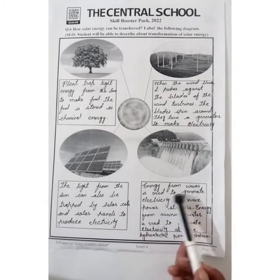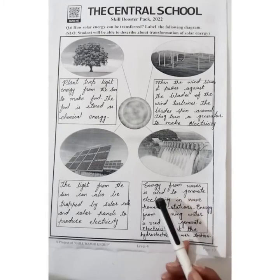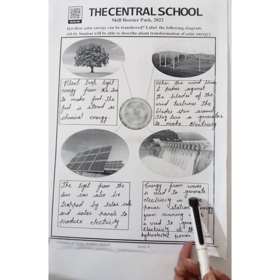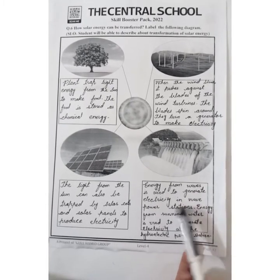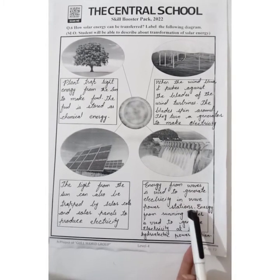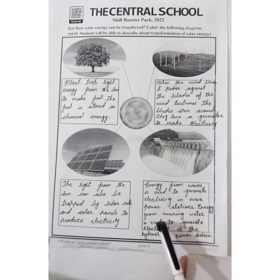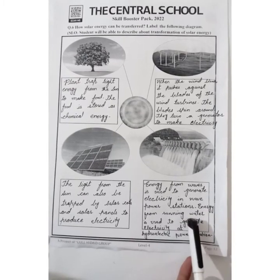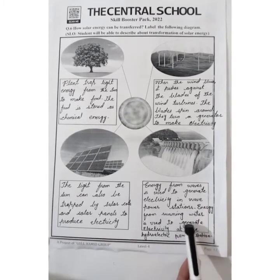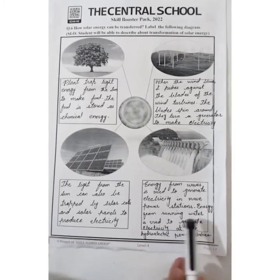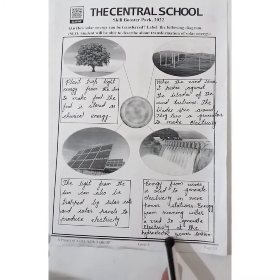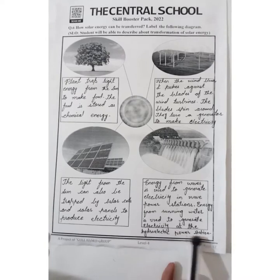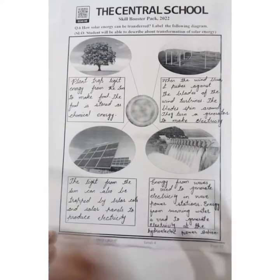This is a dam. Energy from waves is used to generate electricity in wave power stations. Energy from running water is used to generate electricity at hydroelectric power stations.